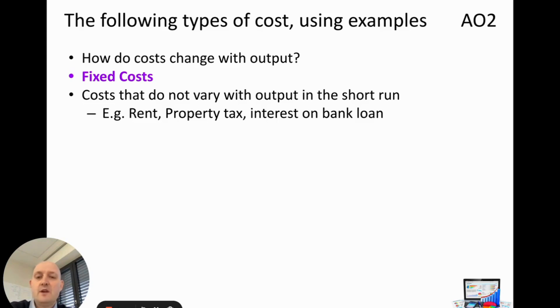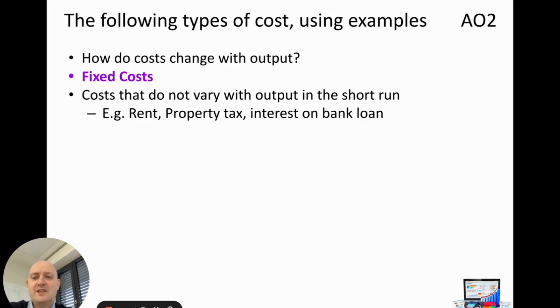The same applies to property tax and interest on a bank loan. The bank doesn't really care how much we produce — whether we produce nothing or a lot, we still have to pay that interest.